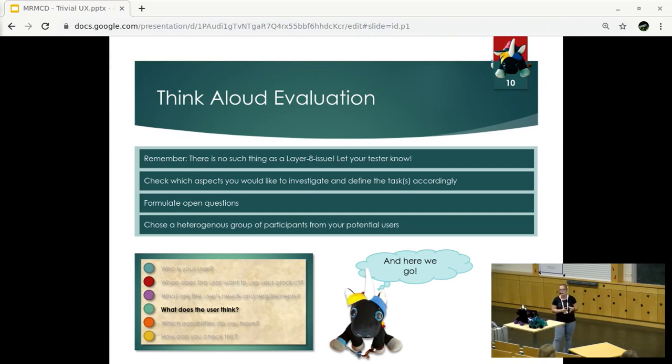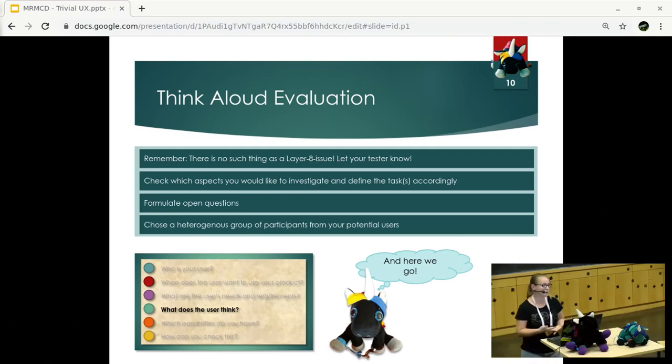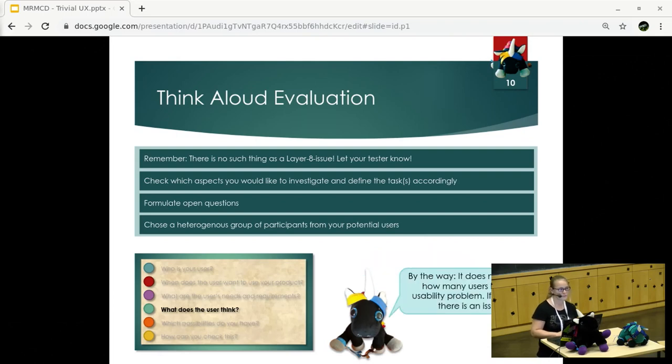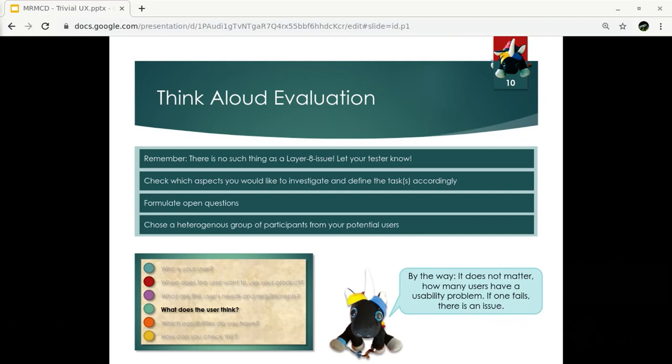So, remember, when we now go through a think-aloud evaluation, there is one rule. There is no such thing as a layer 8 issue. So, when our user is performing a usability test, he cannot do anything wrong. You are going to set up tasks which the user is supposed to fulfill on your webpage. Then you formulate open questions which you would like to be answered during the usability test, and then you choose some participants from your potential users, and it is good if you have a heterogeneous group. If you ask 10 times the same kind of user, you will get similar input. If you ask different types of users for your product, you will get different input. And by the way, for usability, it doesn't matter how many users will have a problem with your software or your product. If there is one user having a problem, then there is a usability issue which you have to analyze.